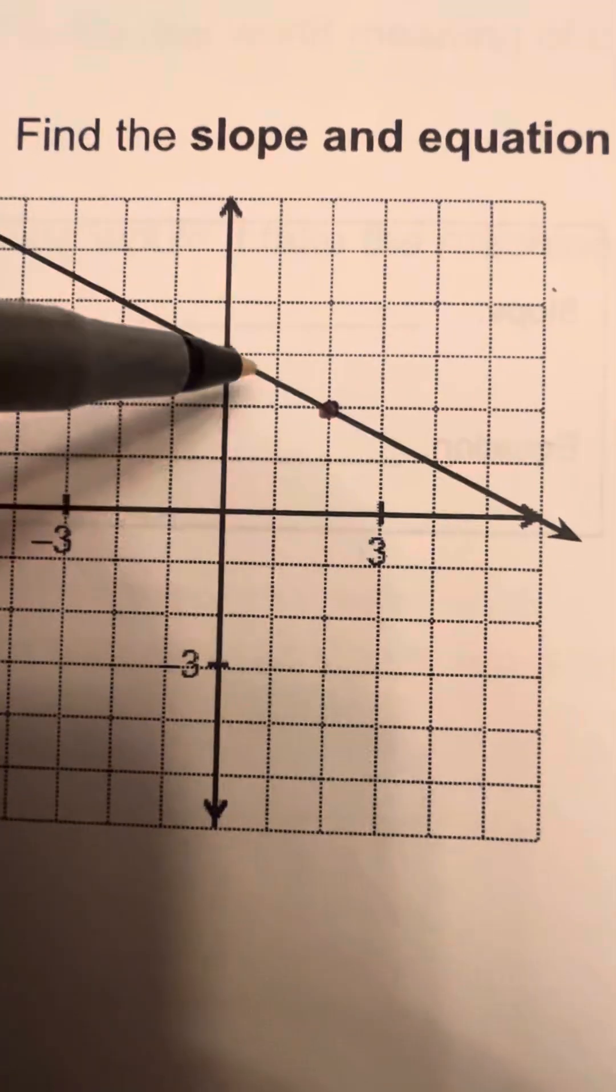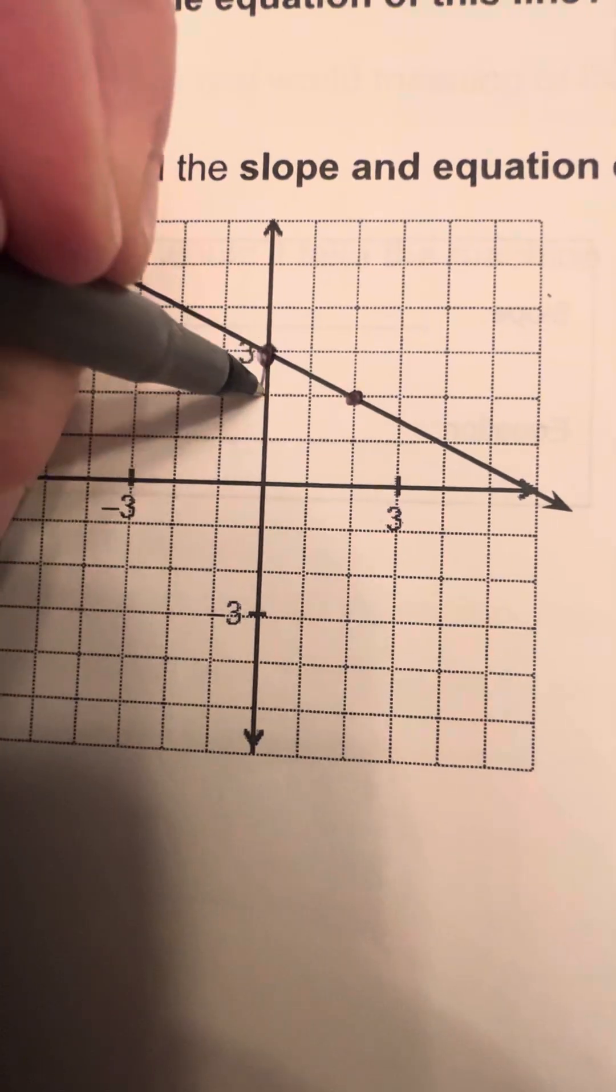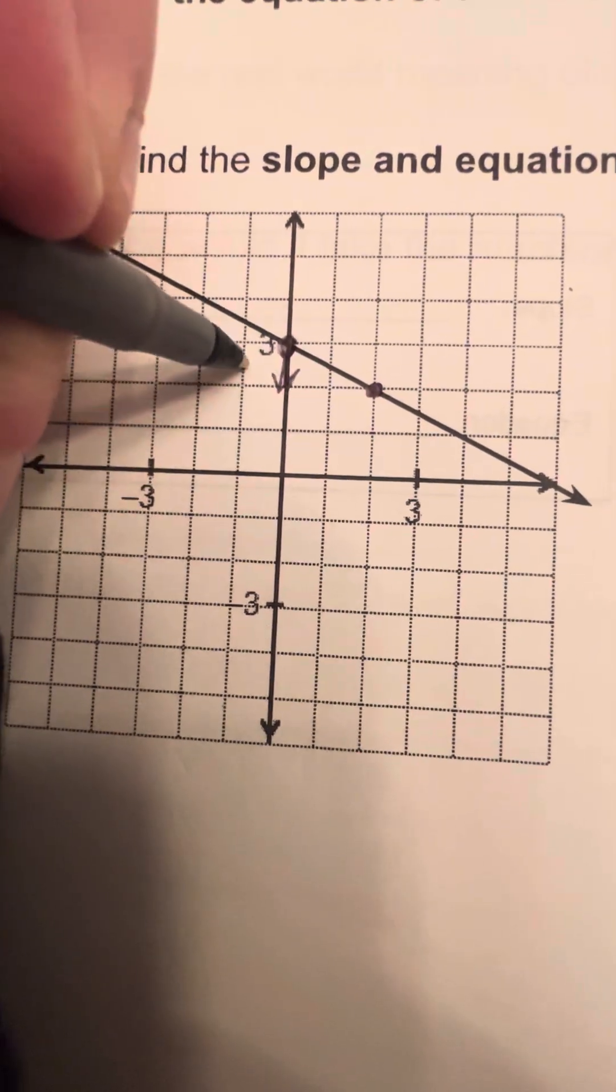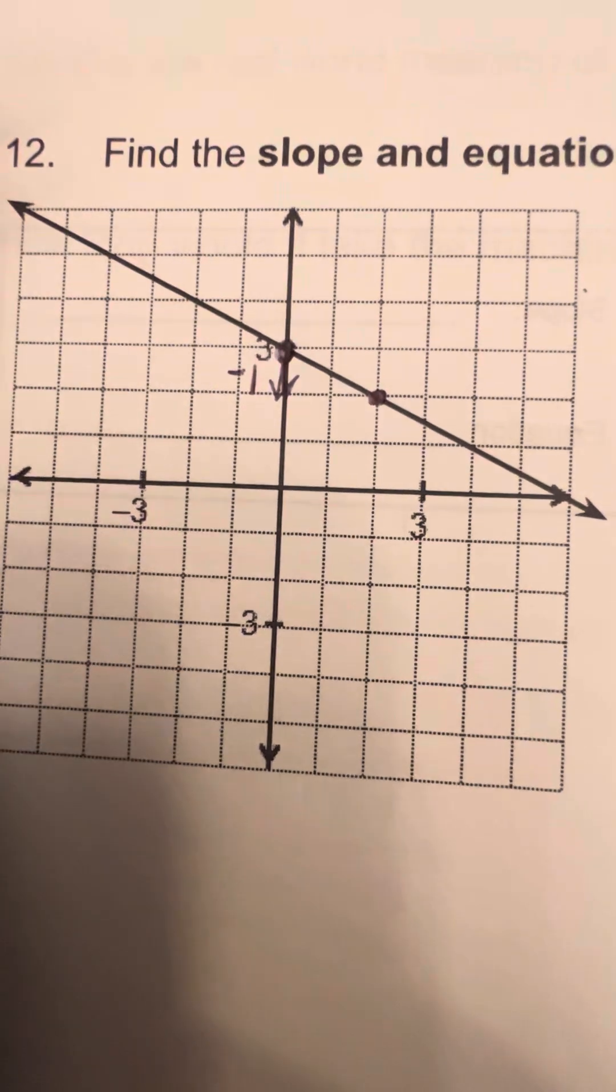So now I'm going to go ahead and count down. We are going to go down one step. So that's down, which is a negative 1.